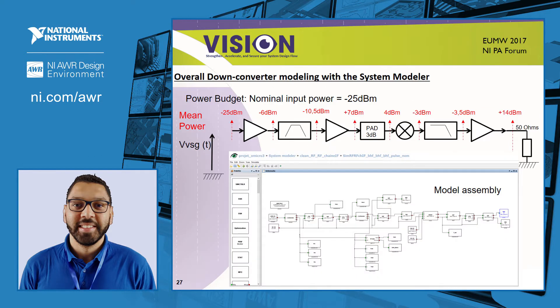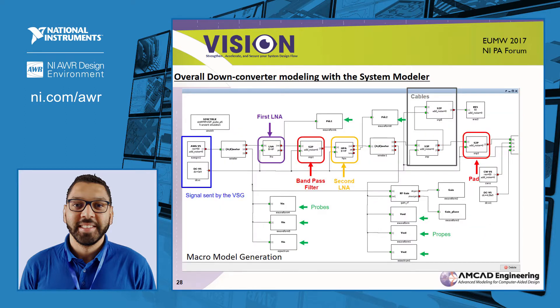In System Modeler, you can build a schematic of your system. We present the different blocks that can be found in the schematic editor, including the different models corresponding to the elements of the system. The schematic editor provides probes to see data at different points of the system, and the data collected by these probes are useful for displaying the different figures of merit. Sources are available to test your system model against simple signals such as two-tone or pulse signal, and you can also add your own signal in IQ file format.